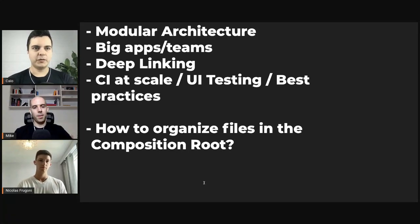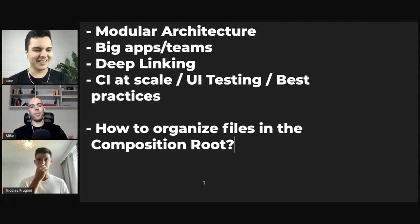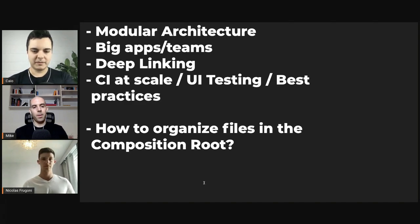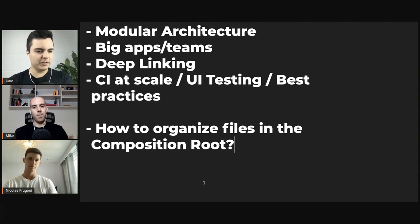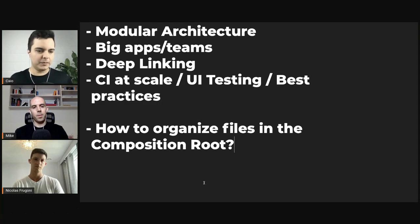How to organize the files in the composition route, especially for big apps? Because if you have like 700 screens in your application, you have a bunch of factories and DI containers, probably dependencies and so on. Always start simple — you start adding your factories and adapters in the composition route, which is the main module where you start your application, and keep them all in the same module as it starts growing.